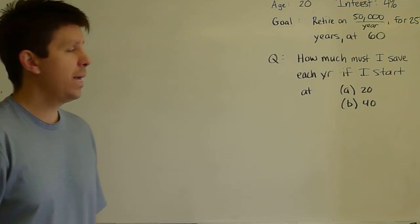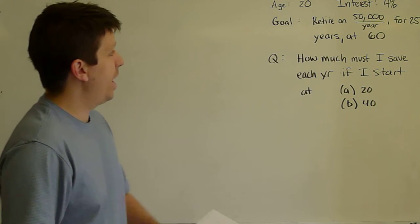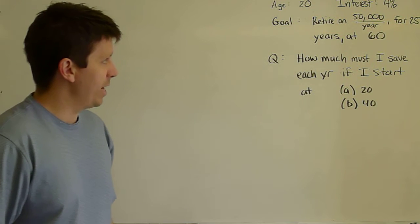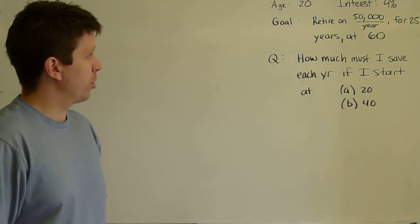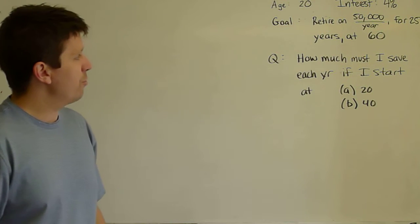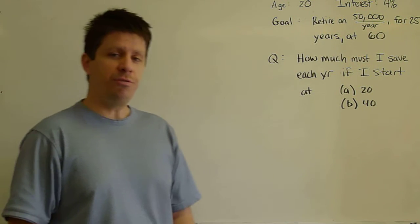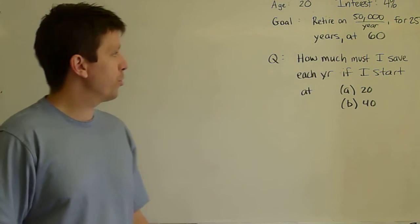And it goes like this. Your current age is 20, and let's assume that the inflation-adjusted interest rate is 4% per year that you can earn in the stock market or whatever. And you have a goal. Your goal is to retire on $50,000, today's dollars per year,